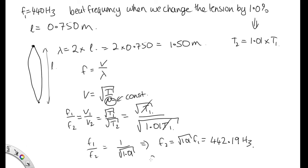So the beat frequency, F beat, is equal to the absolute value of F1 minus F2, which is 442.19 minus the 440. So that gives us 2.19 hertz.